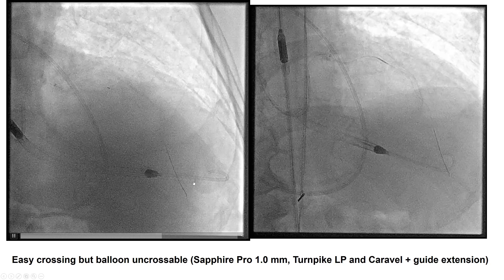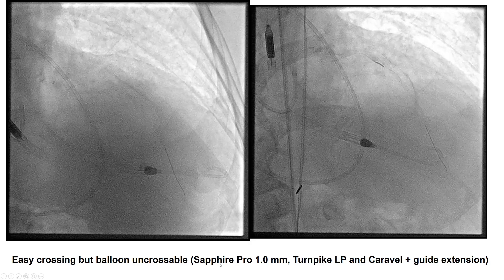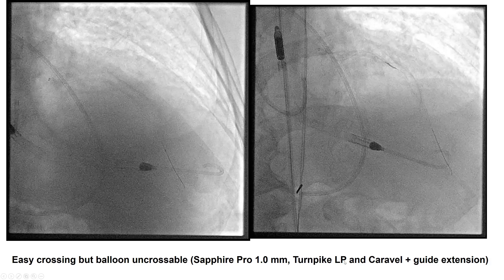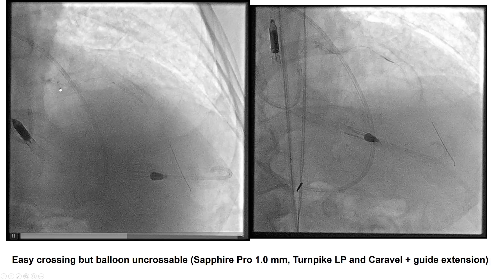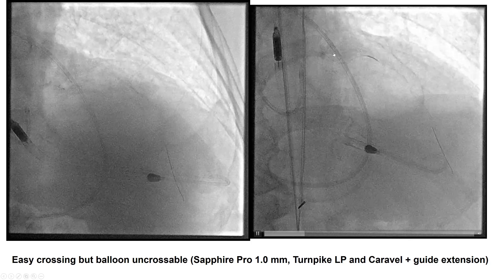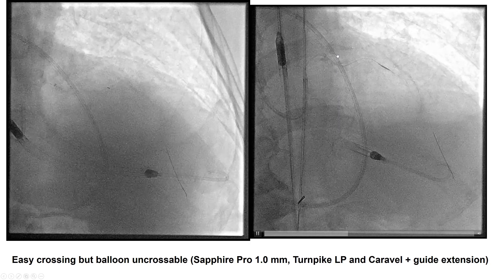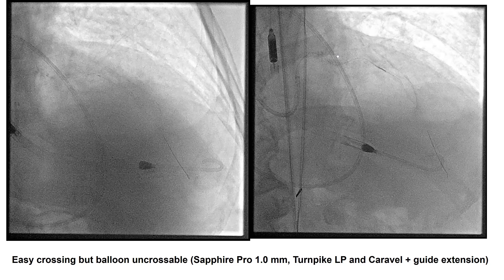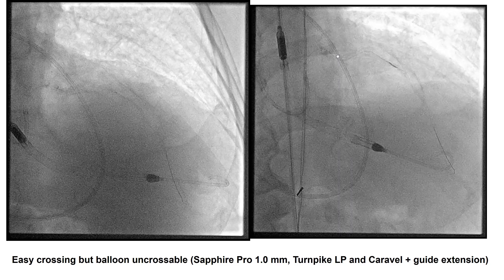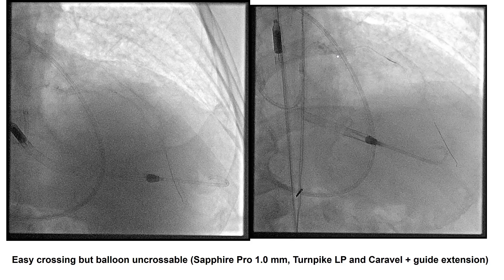However, the problems came afterwards, because we were unable to deliver either a small balloon — including a Sapphire Pro 1.0 — as well as a Turnpike LP and a Caravel microcatheter, even though we did use a guide catheter extension. This is commonly a problem when crossing is easy in heavily calcified lesions — you can have a lot of difficulty delivering equipment due to severe calcification. Interestingly, if dissectional reentry techniques are used in those lesions, stent expansion and crossing are actually much easier.